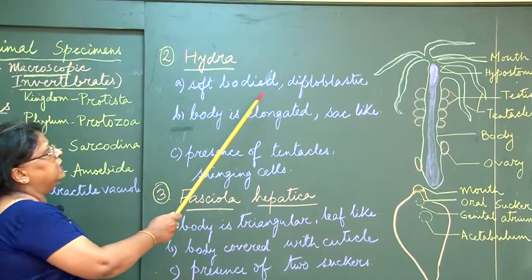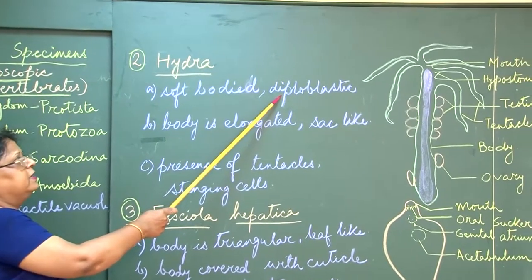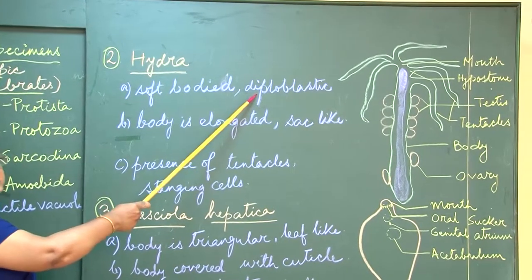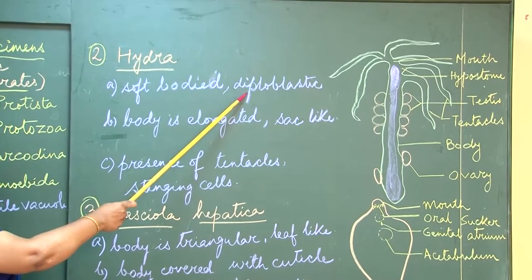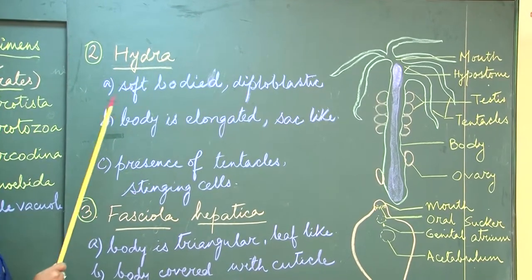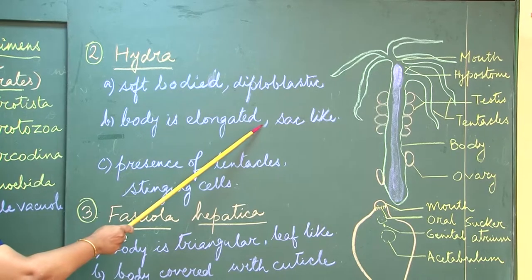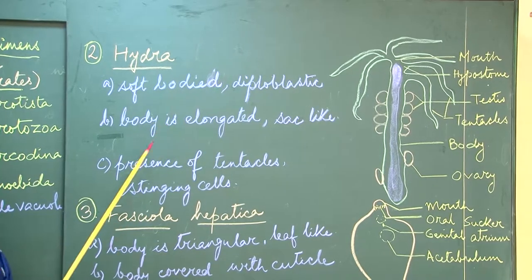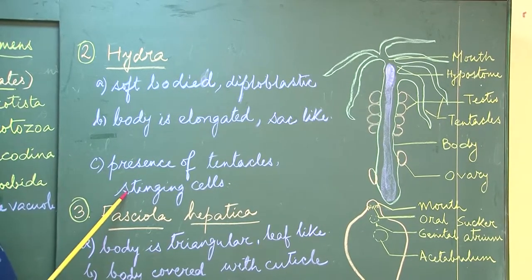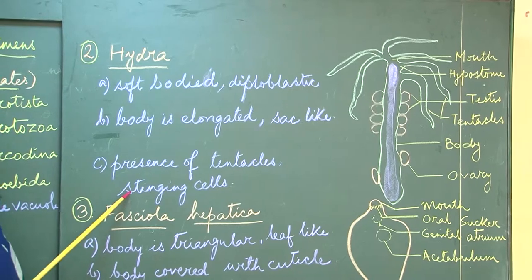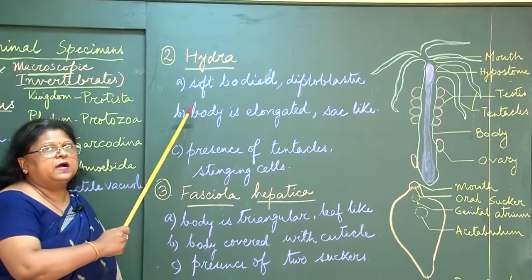Hydra has a soft body, they are diploblastic — meaning they have ectoderm and endoderm. The body is elongated and sac-like, with presence of tentacles and stinging cells. These are the unique features of hydra.